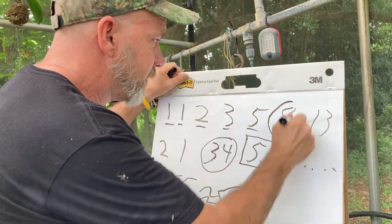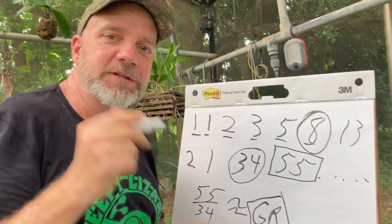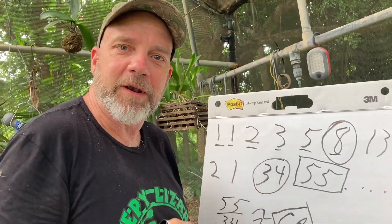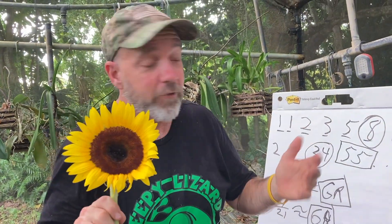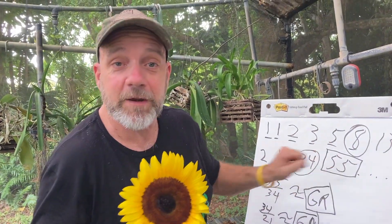Eight is a member of the Fibonacci sequence. If you counted the petals on this sunflower, you would also land on a Fibonacci number.